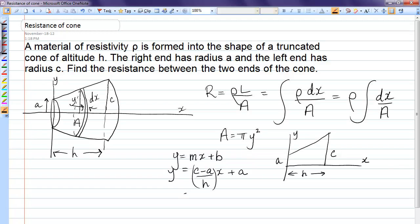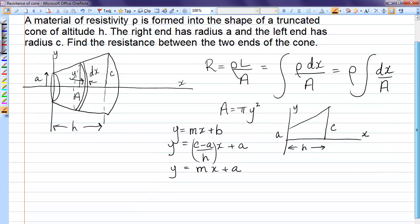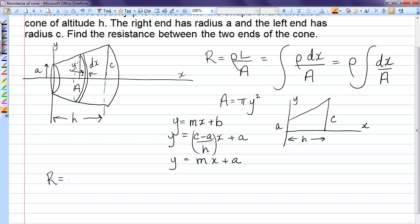Now, instead of writing (c - a) over h so many times, I'm just going to leave it as mx plus a. Now, I'm going to sub that into my integral and carry out the integral. So R becomes ρ dx, and instead of A, I'm going to write πy², and instead of y², I'm going to take the π out as well. Instead of y², I'm going to write (mx + a)². And to further help with this integral, I'm going to bring that (mx + a) to the top and take it to the negative 2 power dx.